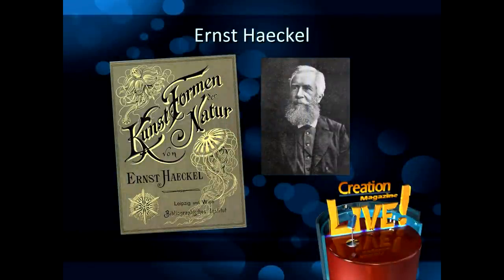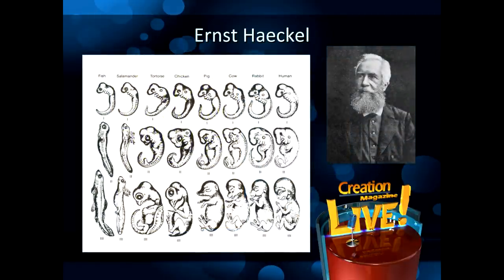We've actually got a flyer on two recently exposed frauds used to support evolution. The first one is embryonic recapitulation — this notion that as living things develop toward birth, they retrace their evolutionary ancestry. Many of you will be familiar with the pictures done by Ernst Haeckel, which show extreme similarities in these different animals.